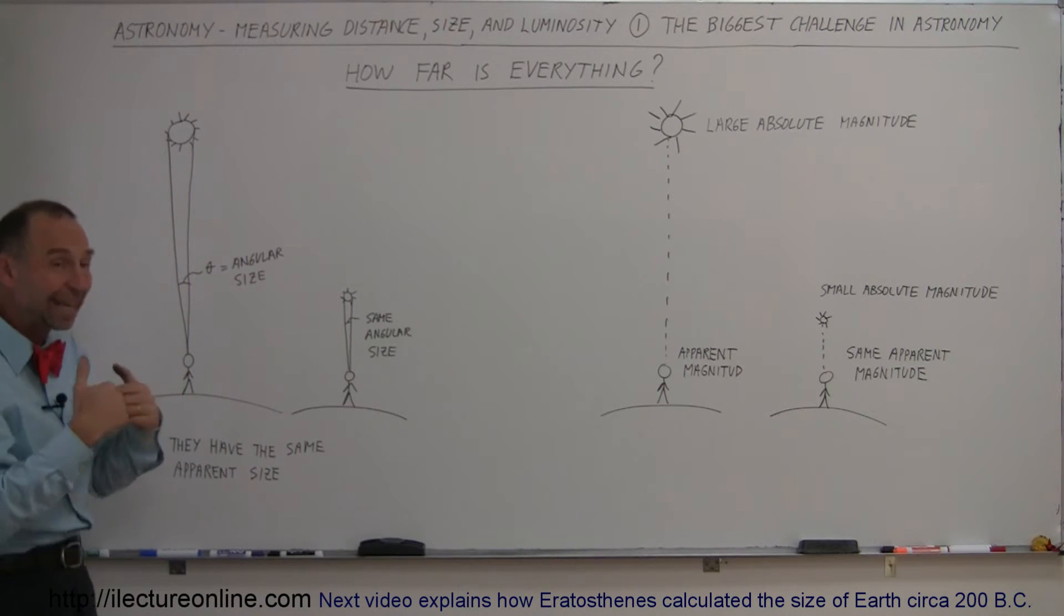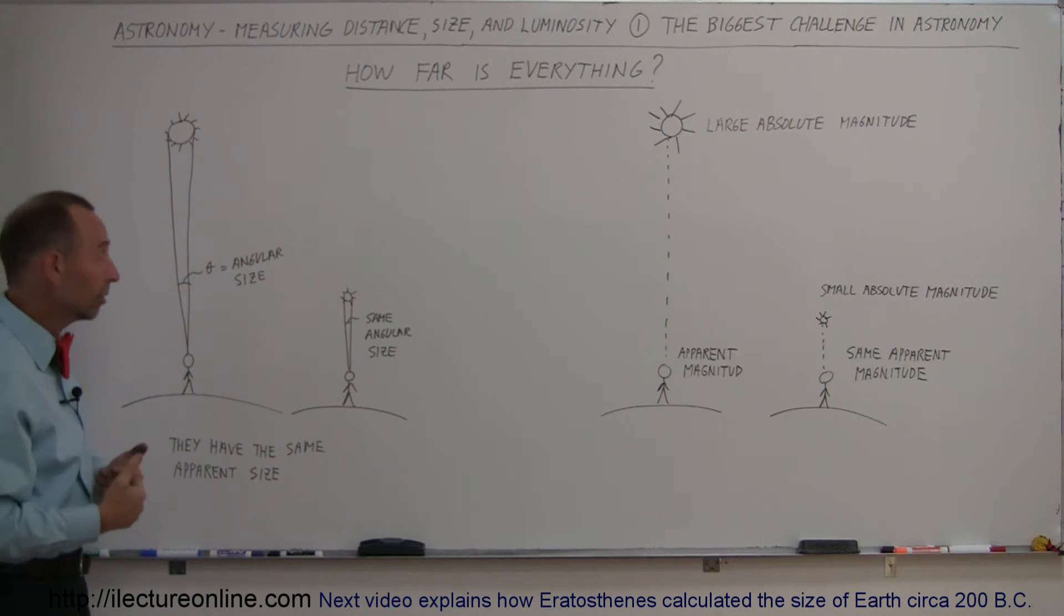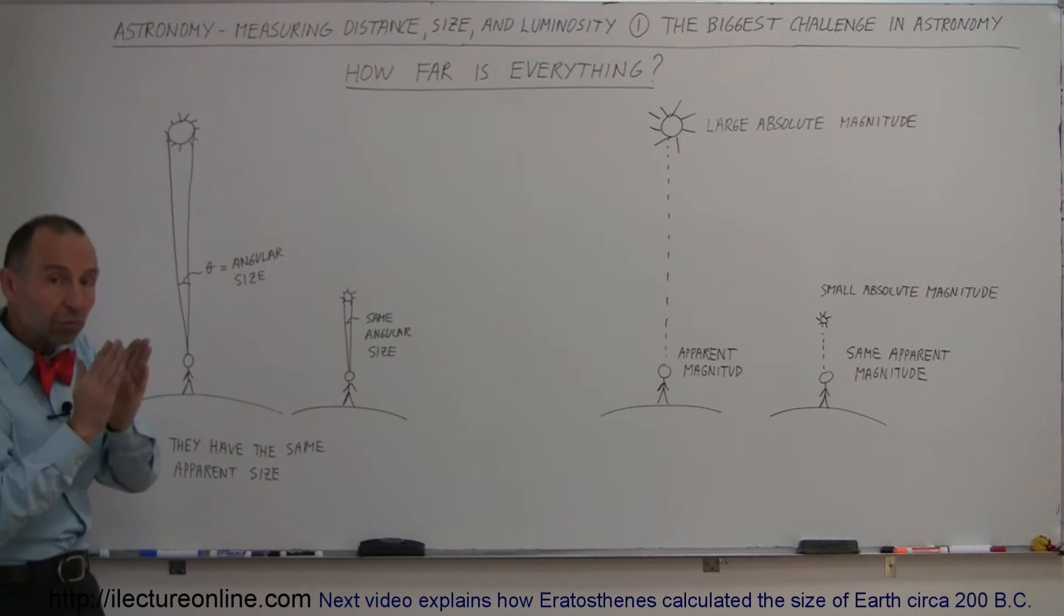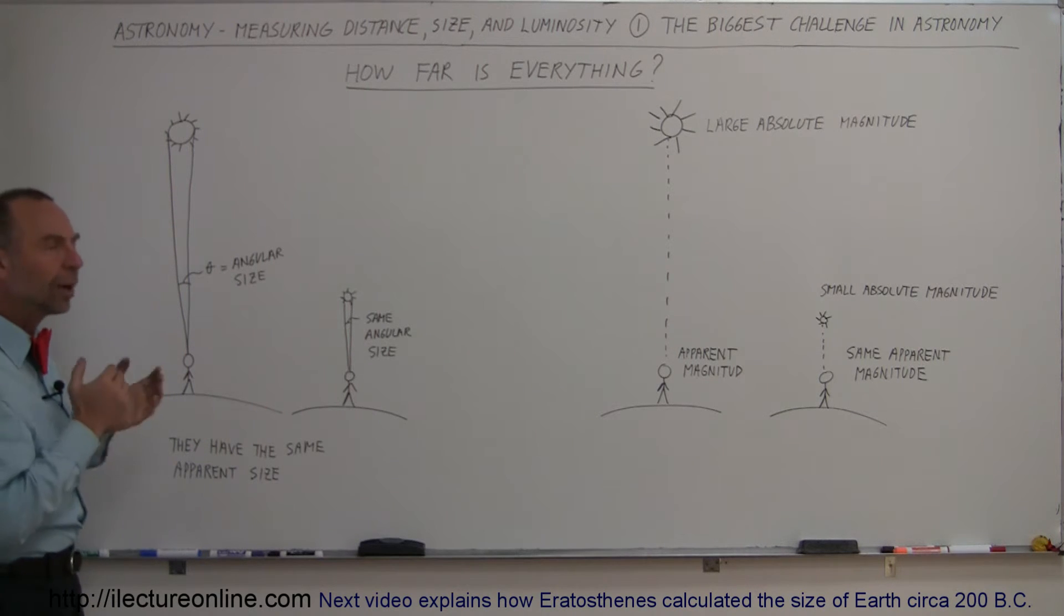So to us, the two objects will look exactly the same size, and so we're going to assume that they're the same size, and maybe even assume they're the same distance. We really don't know whether or not one is farther away than the other. Maybe this was a really big star really far away, so it looks small, we just don't know. And so that was always the biggest challenge. The biggest challenge is how far is everything that we look at in the universe.